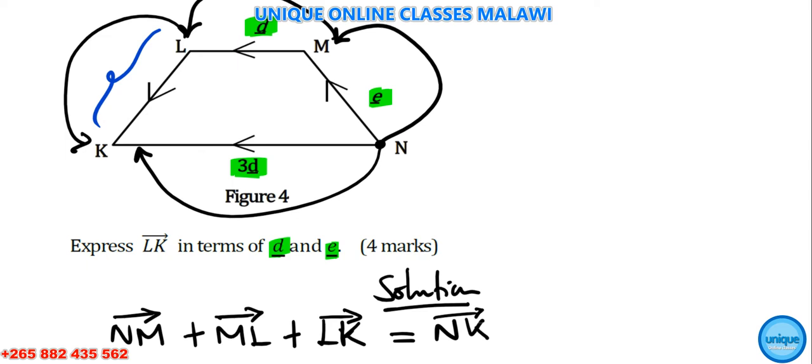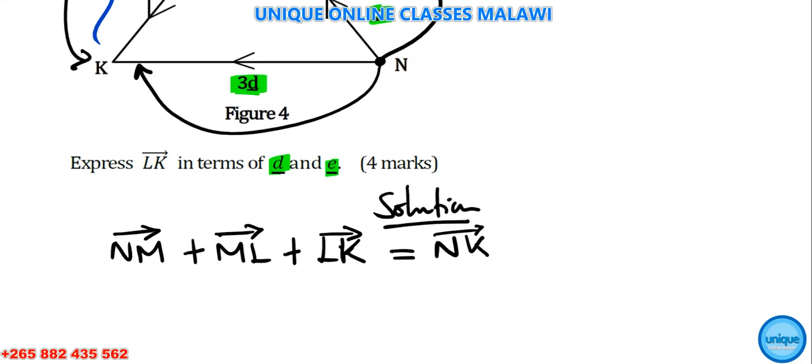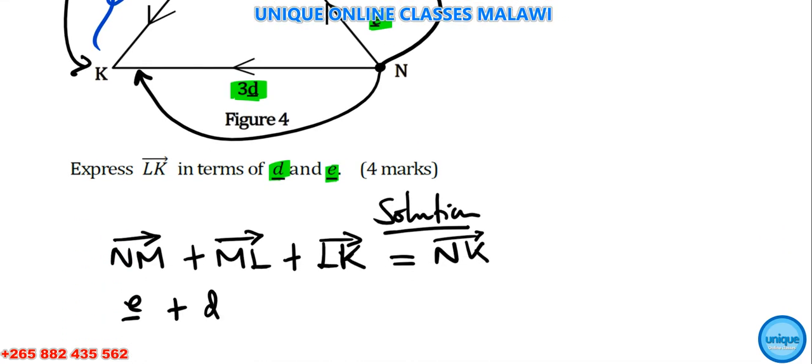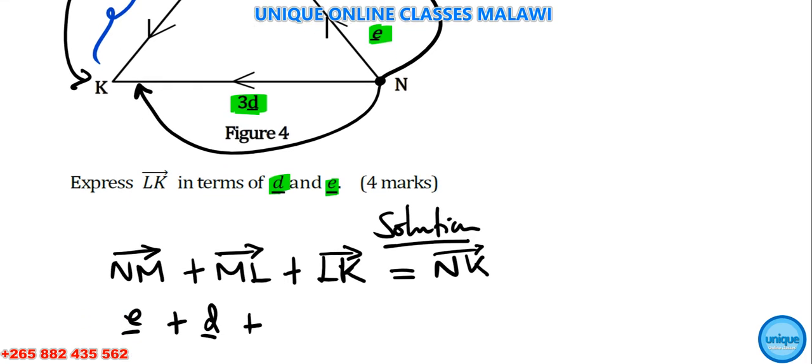So NM, we are putting e there, then plus ML, we are putting d there, then plus LK is equal to NK, we are putting 3d there.